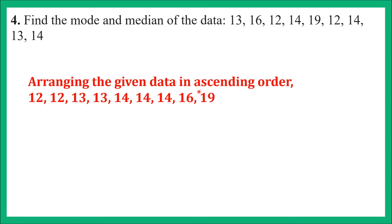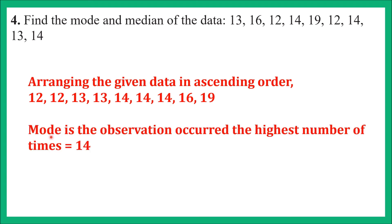I have arranged the data in ascending order. The smallest observation is 12, which appears twice, so written twice; then 13, which also appears twice; then 14, which repeats 3 times; then 16 and 19. Now we find the mode. Mode is the most frequent observation. Here 14 repeats the most, so the mode is 14.